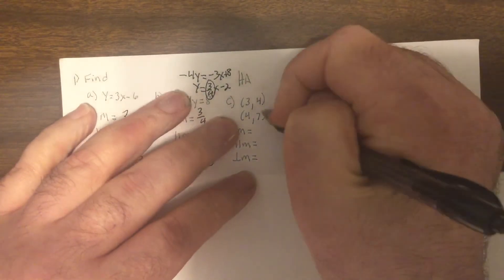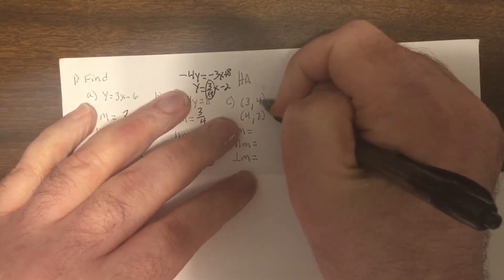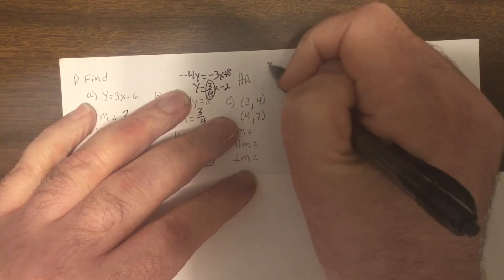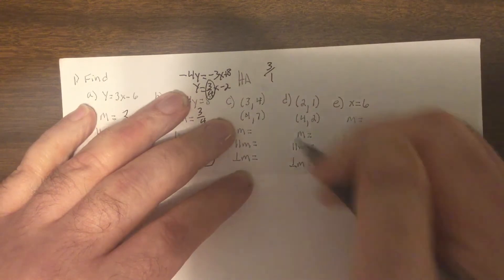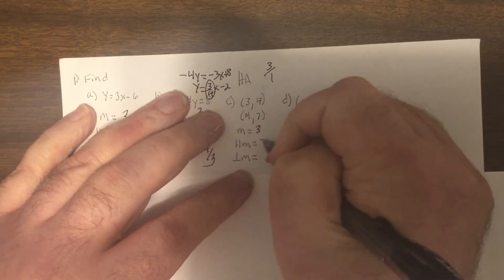Now, this one. We find the slope. So it's change in y. 7 minus 4 is 3 over change in x. So that'd be 4 minus 3 is 1. So 3. Parallel is 3. So perpendicular is negative 1 third.